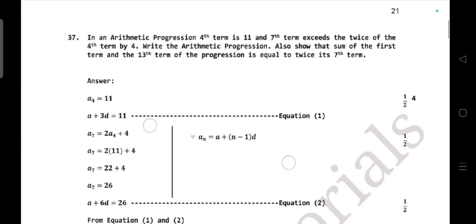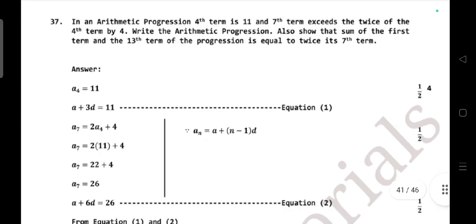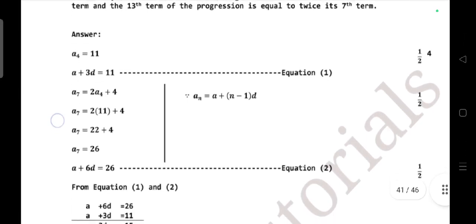In an arithmetic progression, fourth term is 11 and seventh term exceeds the twice of the fourth term by 4. Write the arithmetic progression. Also show that the sum of the first term and 13th term of the progression is equal to twice of its seventh term.